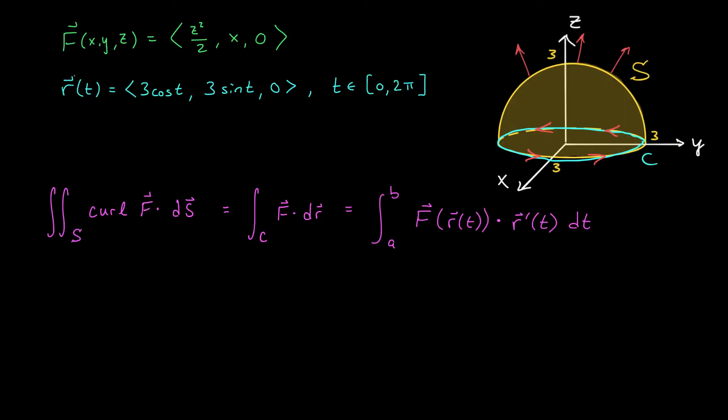So once again, we have our vector field F, the parametrization of our curve C, and we're trying to compute this surface integral, which we've traded out for a line integral. Thanks, Stokes Theorem. According to definition, this line integral is really the integral along C of F(R(t)) · R'(t) dt.